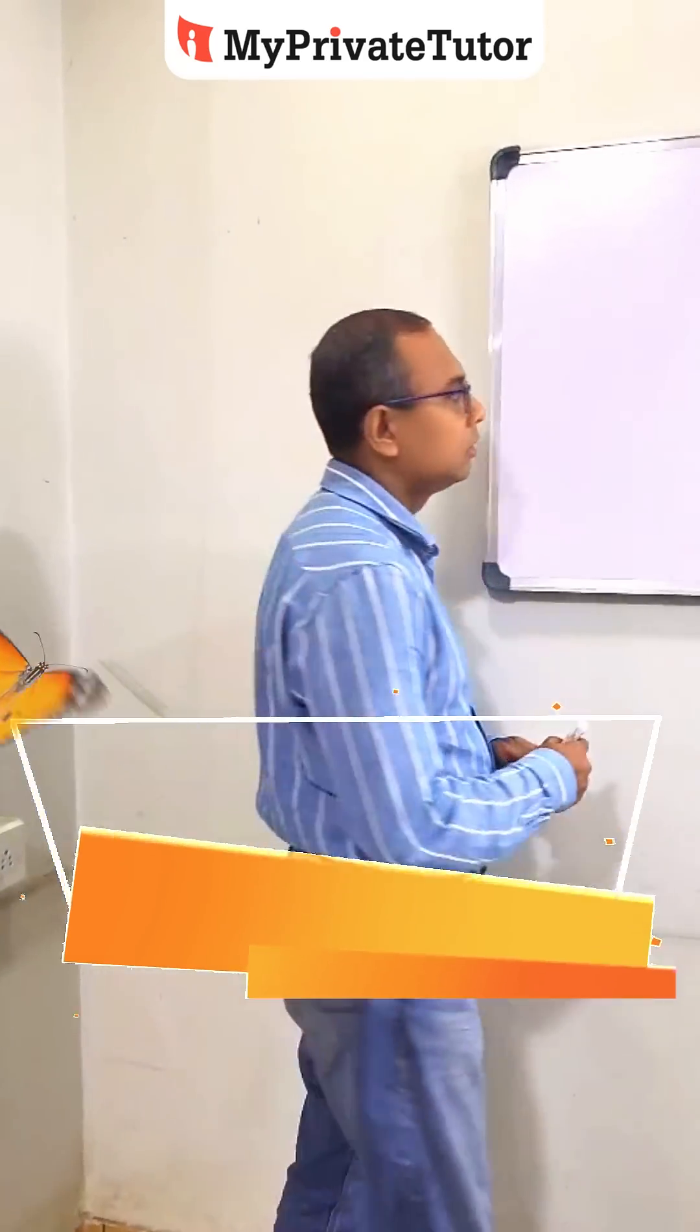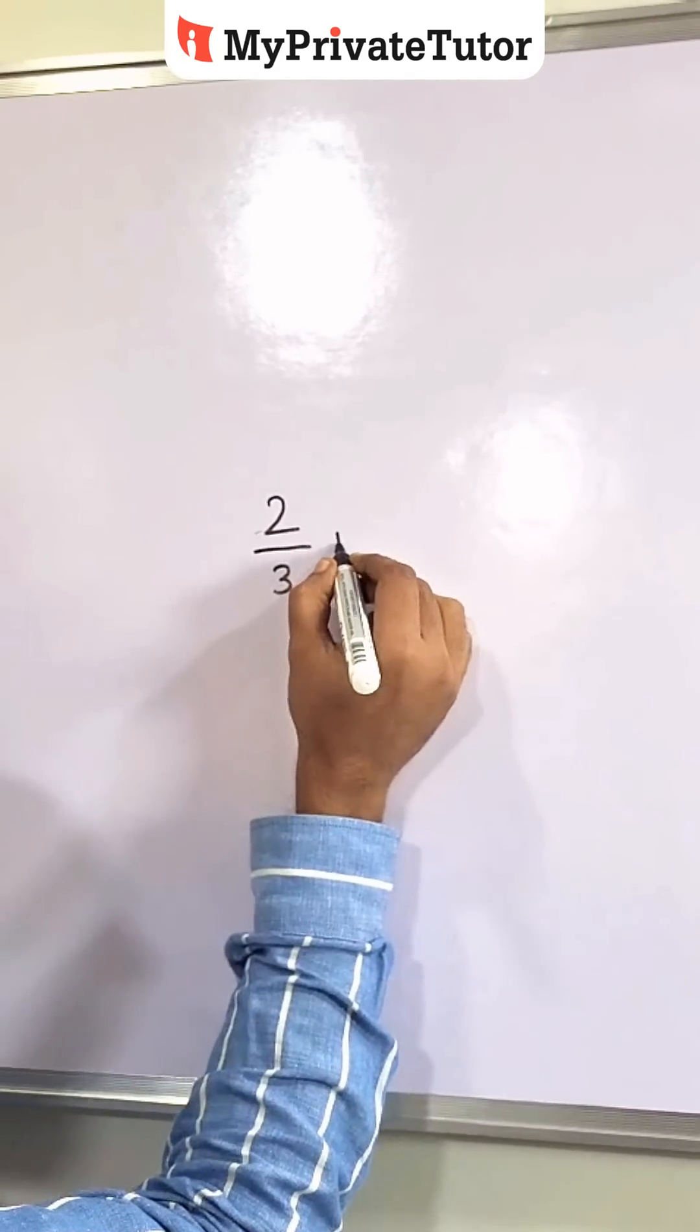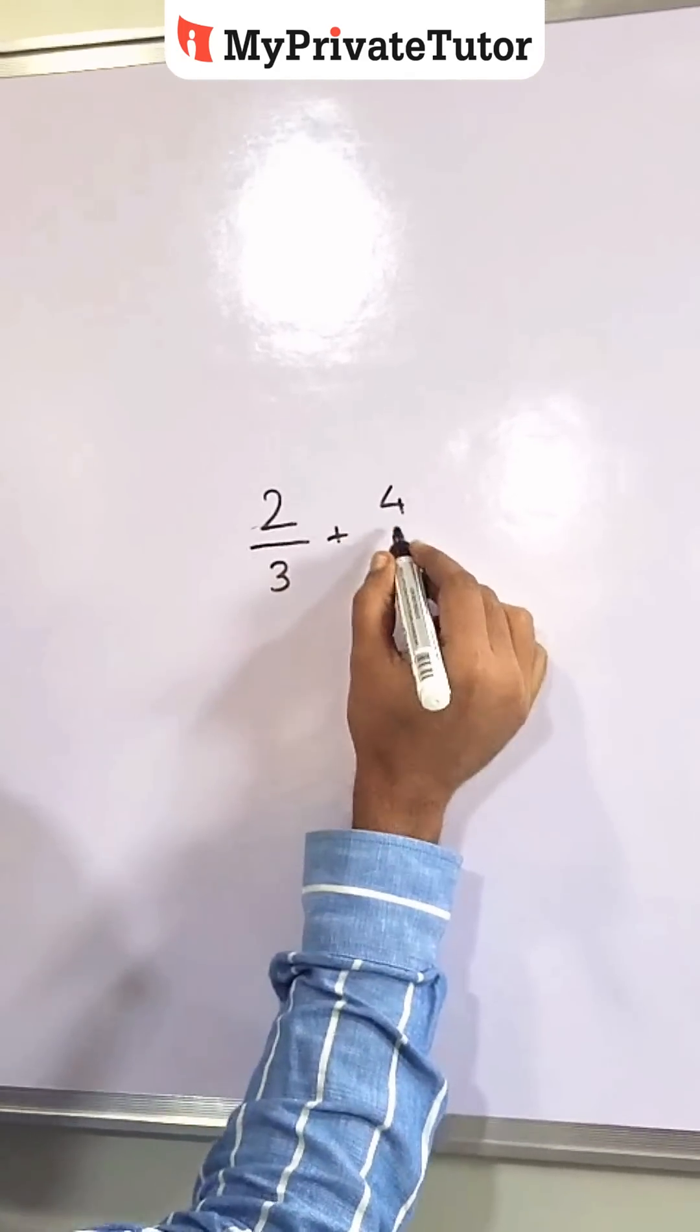Let us take an example: 2 by 3 plus 4 by 7.